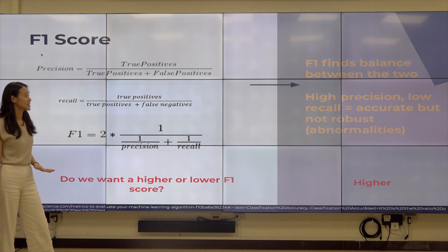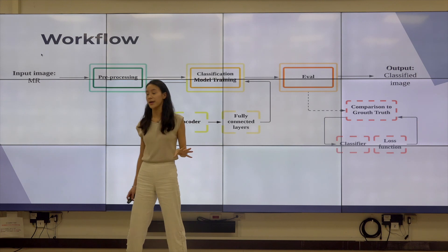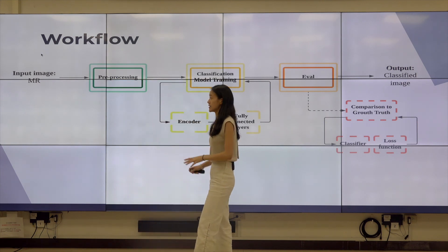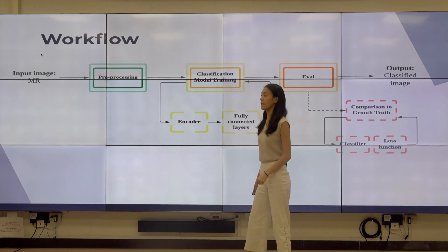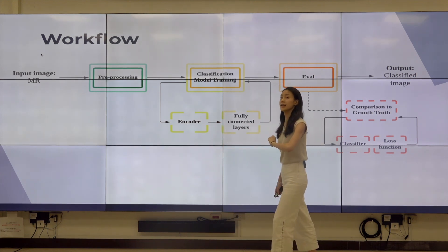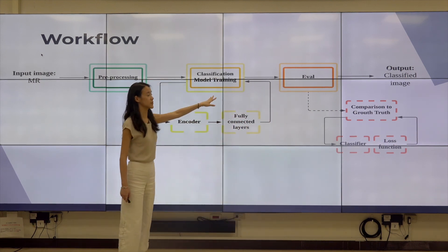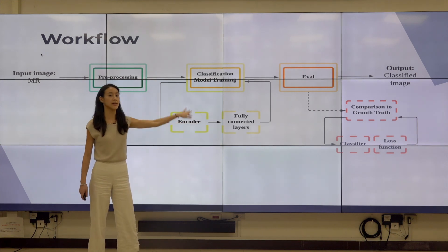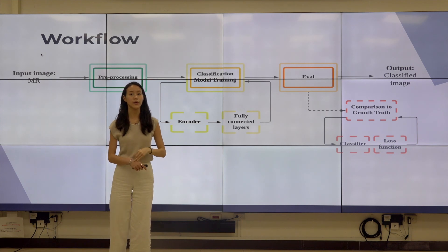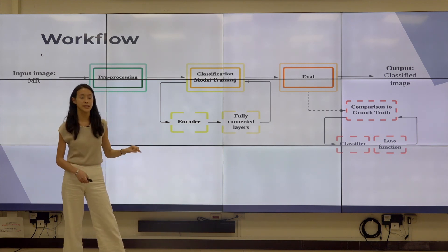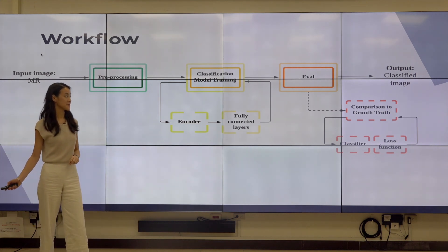To summarize the entire workflow: we start with an MRI image, it goes through the pre-processing method, then the model training process where features are learned, then the evaluation process where a testing dataset comes in to identify the accuracy of our model and what objects are classified in the image.